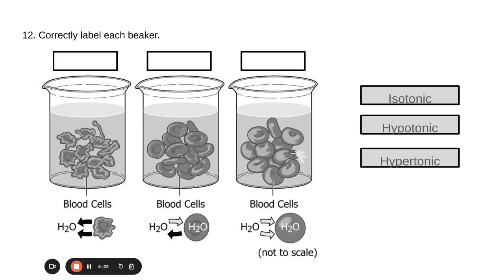Remember that iso means equal. So that means that your second beaker is the isotonic solution. So that means that the percent of solute in the solution and the cell are the same. And so there's no net movement of water into or out of the cell. This kind of moves back and forth.